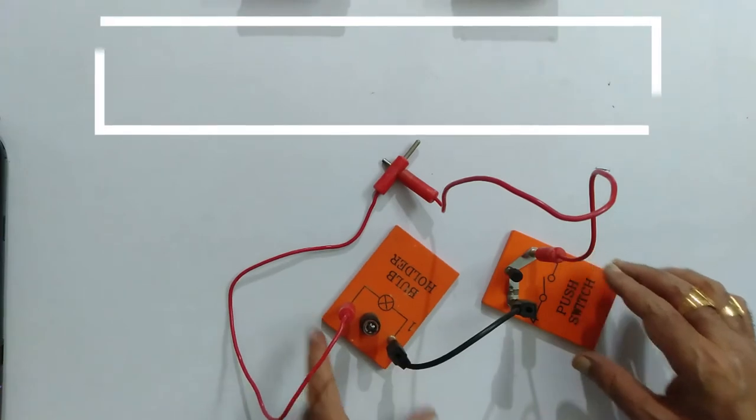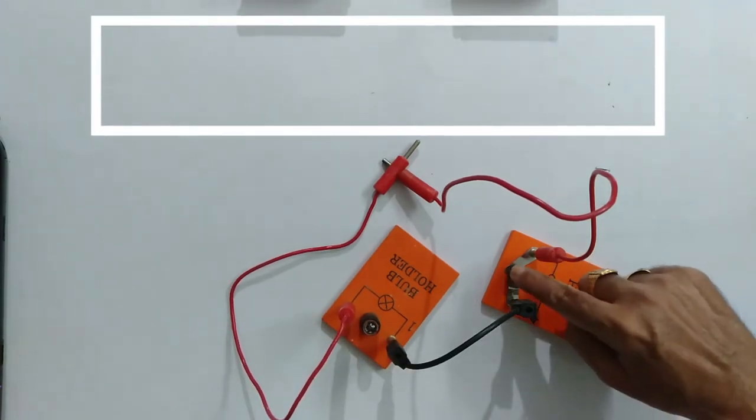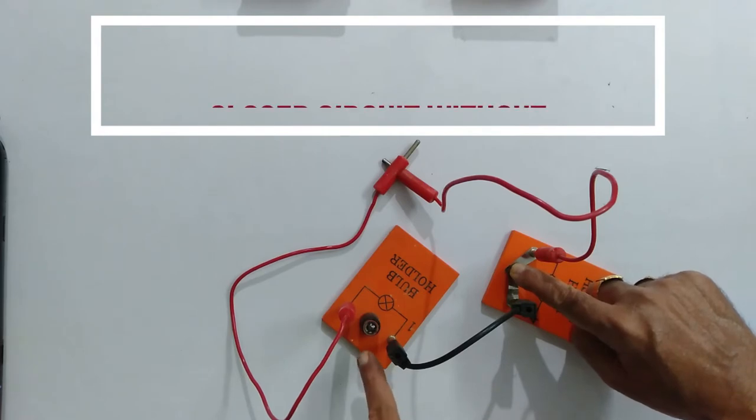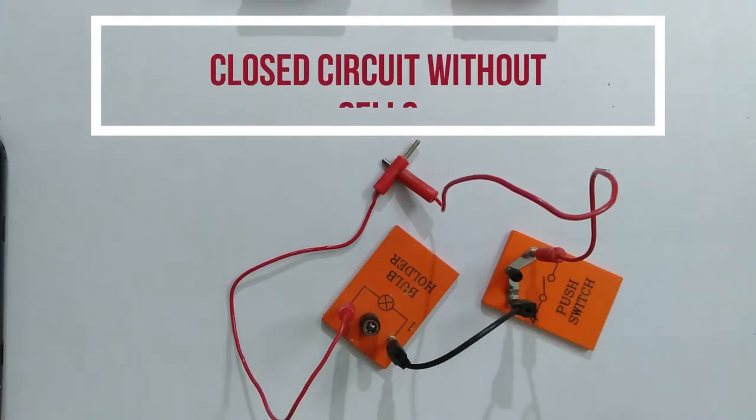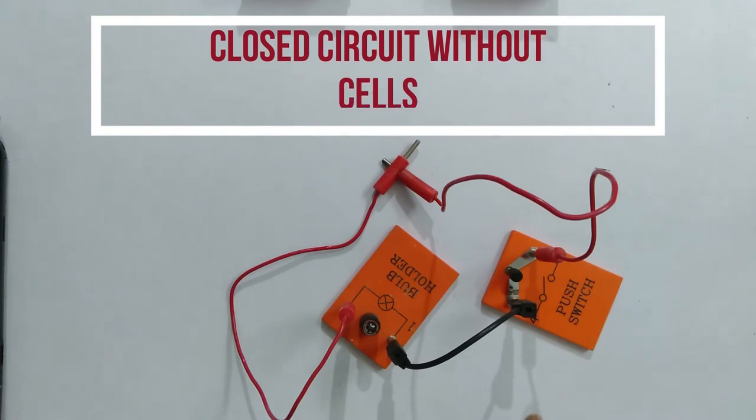Now again, I'll push the switch. But this time, it is seen clearly that no bulb is glowed. What is the difference between the previous activity and this activity?